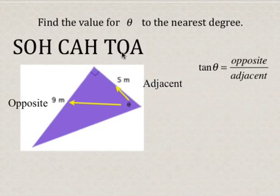So if we're dealing with opposite and adjacent, we're going to use tangent. And so tan theta is opposite over adjacent, and so we're going to sub in, and tan theta is 9 over 5.